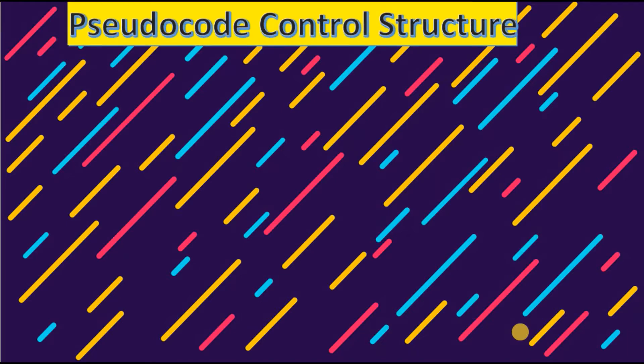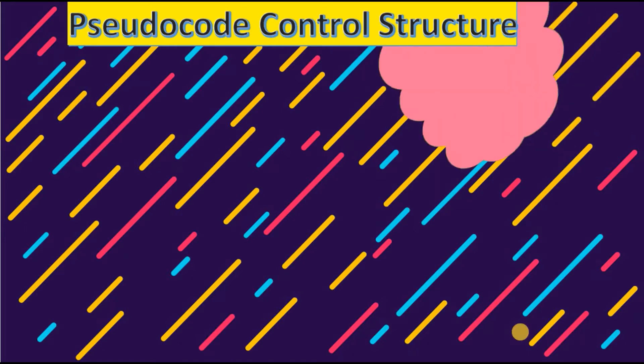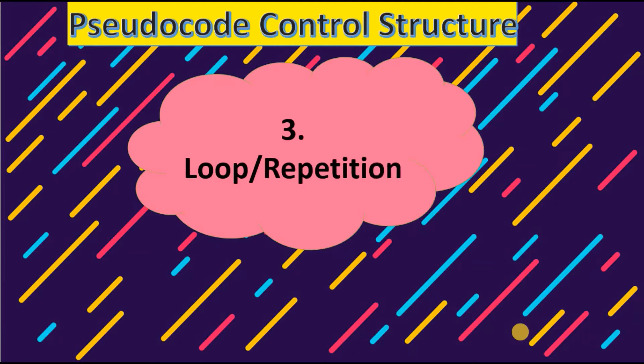Welcome back to another video tutorial where we are still looking at the topic of pseudocode control structures. In our previous videos we identified the sequential control structure, the decision or selection control structure, and thirdly we started looking at the loop control structure. One type of looping structure we recently identified was the for loop, which is a type of repetition of instruction whenever we know the amount of times the instructions are expected to be performed.